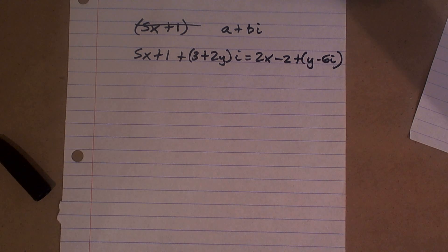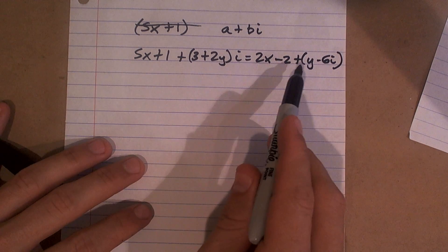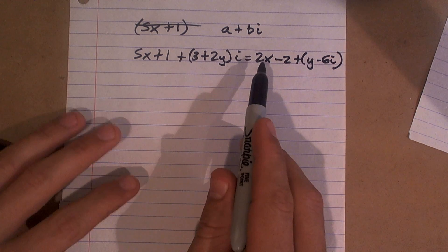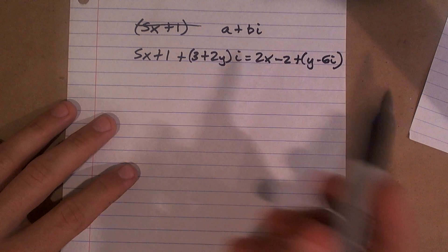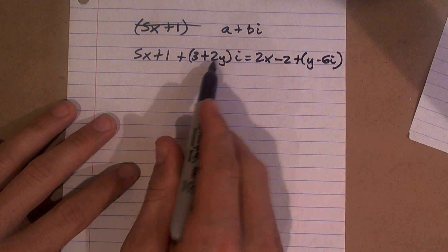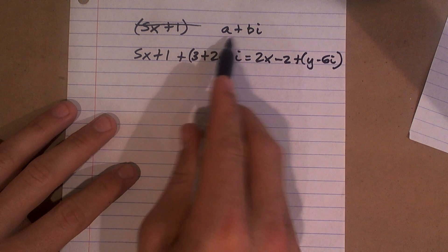So what they're trying to do is they're just asking us, find the value of x and y that are going to make this true. So what we want to do is we want to put both of these in the form of your complex numbers. So what I need to do is I need to look at this and say, alright, how can this represent a plus bi?